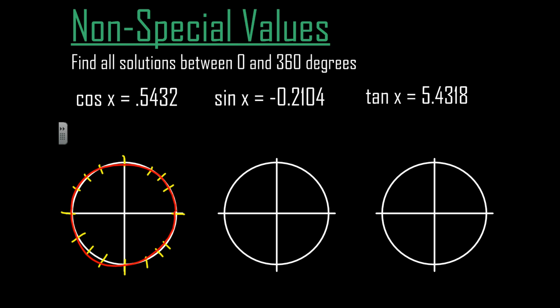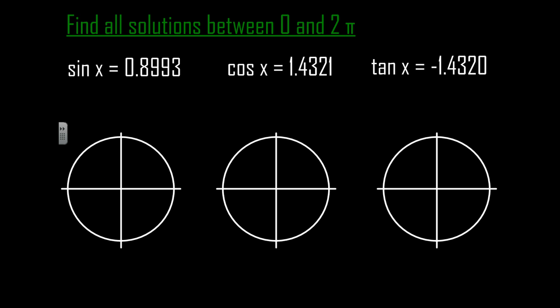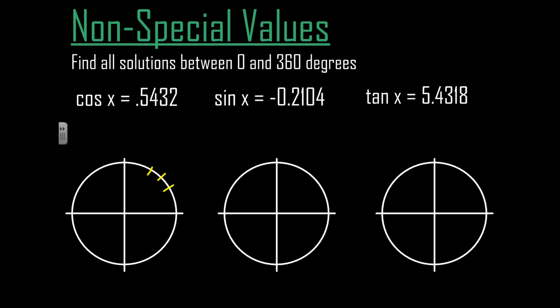So to start, let's take a look at cosine of 0.5432. We'll get rid of all that there. Where is the cosine equal to 0.5432? Alright, well, to find an angle given the ratio, I can use my calculator and I can use the cosine inverse of 0.5432.